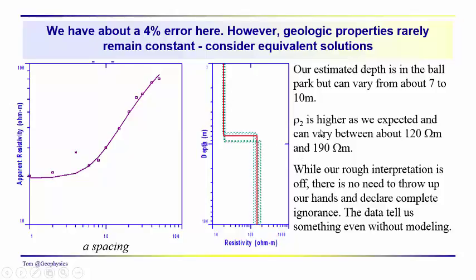Here we're again, kind of highlighting that we could have depths from about 7 to 10 meters. And that rho two could vary between 120 to 190 ohm meters. 120 being associated with a shallower depth and 190 with a deeper depth.